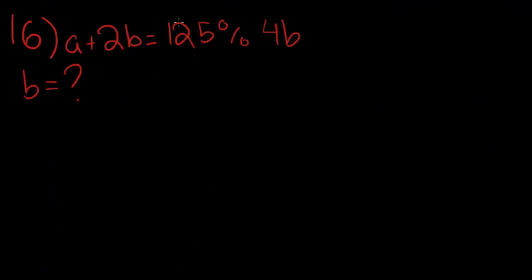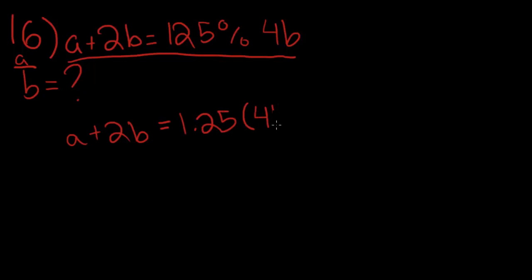If a plus 2b is equal to 125% of 4b, what is the value of a over b? So, actually, that's not b, that's a over b. So, let's take the equation up here. If it's 125% of 4b, so a plus 2b is equal to, if it's 125%, then it's 1.25 times 4b.